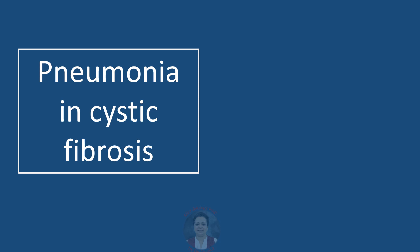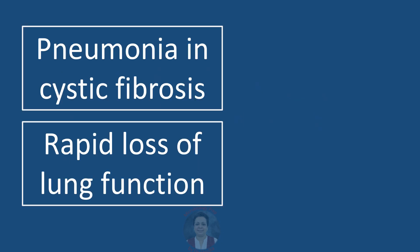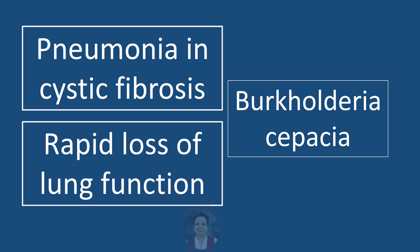A patient with cystic fibrosis presenting with pneumonia — the most likely agents could be either Staph aureus, a gram-positive organism seen as cocci in clusters, or Pseudomonas aeruginosa, an oxidase-positive gram-negative rod. Pneumonia in cystic fibrosis associated with rapid loss of pulmonary function is caused by Burkholderia cepacia.